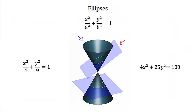The equation of this shape, if the shape has its center at the origin, can be written in standard form: x-squared over a-squared plus y-squared over b-squared is equal to 1. An example in standard form would be x-squared over 4 plus y-squared over 9 equals 1. An example not in standard form would be 4x-squared plus 25y-squared equals 100.